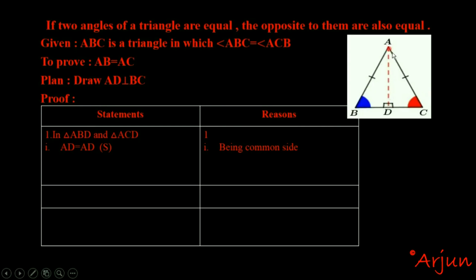AD is the common side. Since we have 90 degrees, we can use a perpendicular line. By RHS, 90 degrees is opposite AC or AB, so we can prove AB equals AC.